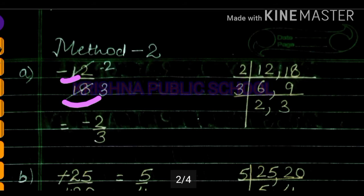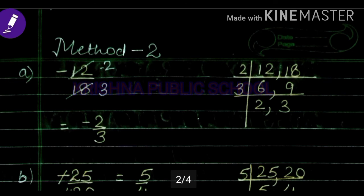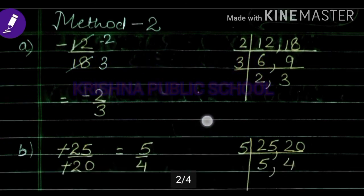Finally, after dividing numerator and denominator by the common factor 6, we get the answer: minus 2 upon 3. The negative sign remains in the numerator.